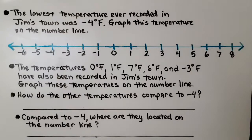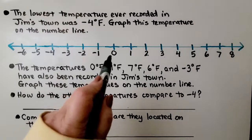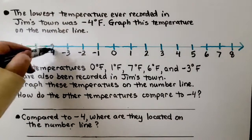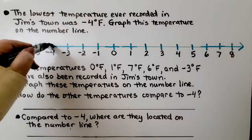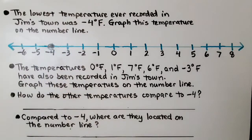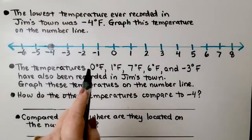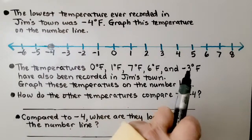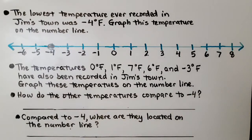The lowest temperature ever recorded in Jim's town was negative four degrees Fahrenheit. Graph this temperature on the number line — we see zero, here's negative four, and we'll put a dot to plot the point. The temperatures zero degrees, one degree, seven degrees, six degrees, and negative three degrees Fahrenheit have also been recorded in Jim's town.